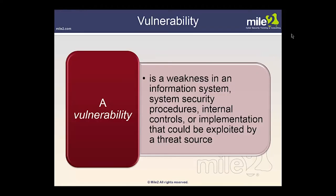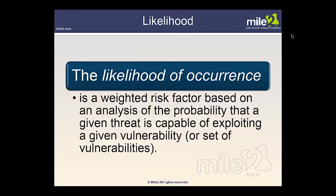A vulnerability is a weakness in an information system, system security procedures, internal controls, or implementation that could be exploited by a threat source — such as a hacker or a weather event like a tornado. The likelihood of occurrence is a weighted risk factor based on an analysis of how likely it is that a given threat is capable of exploiting a given vulnerability or set of vulnerabilities. Different organizations may share a similar vulnerability but have a different likelihood based on their situation.